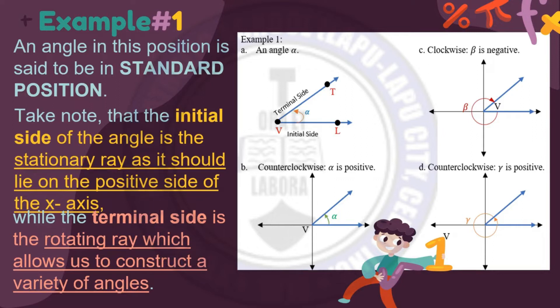Aside from that, the angle is said to be positive if it is rotating counterclockwise, and the angle is said to be negative if it is rotating clockwise.